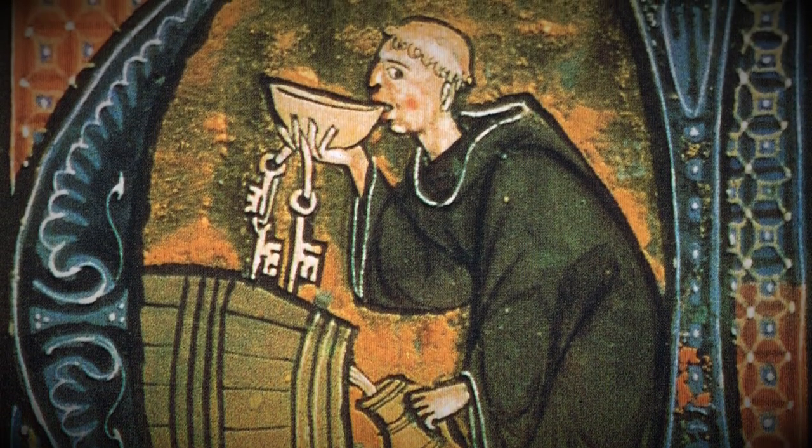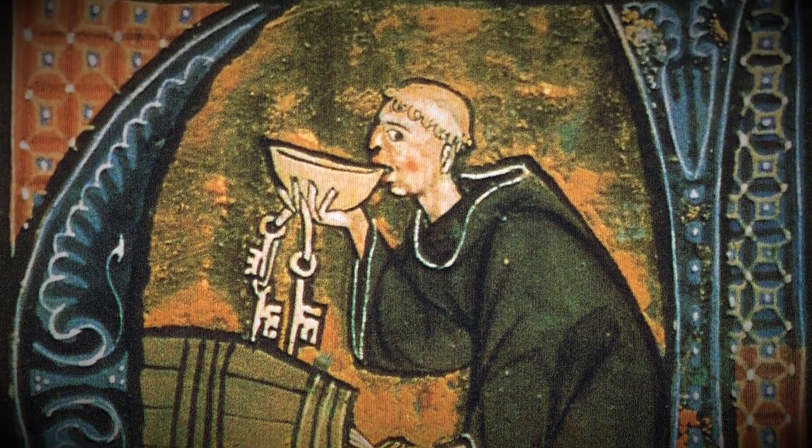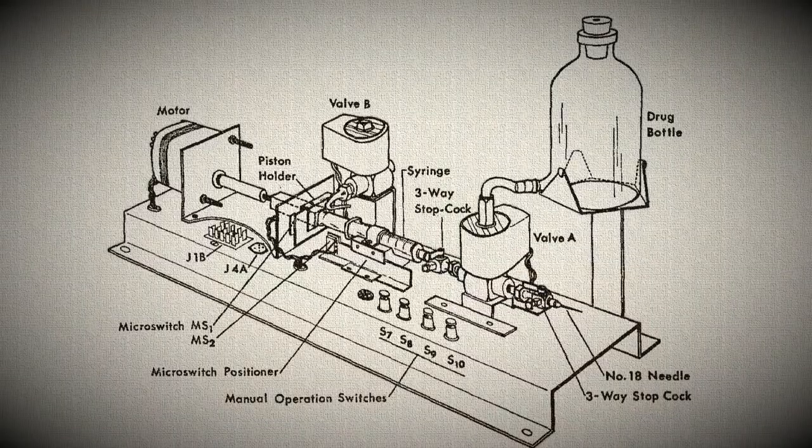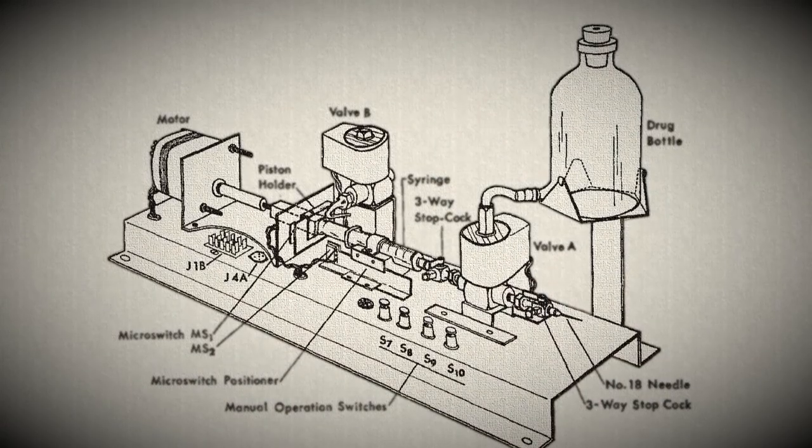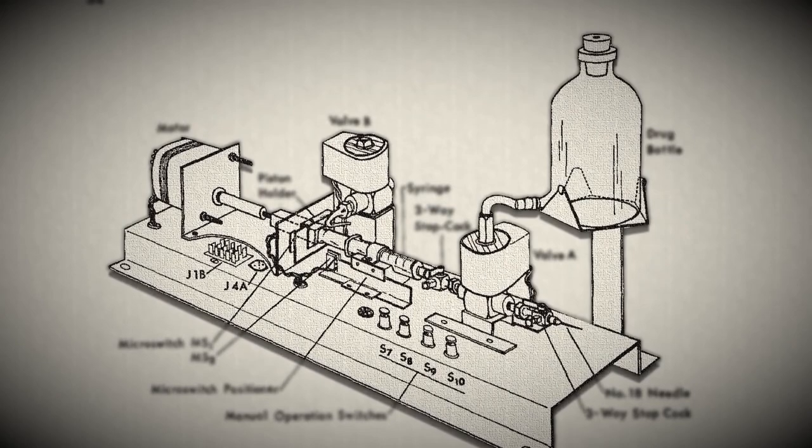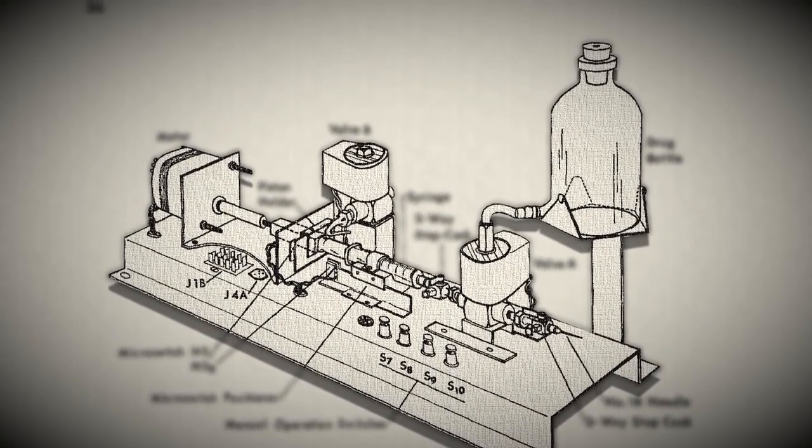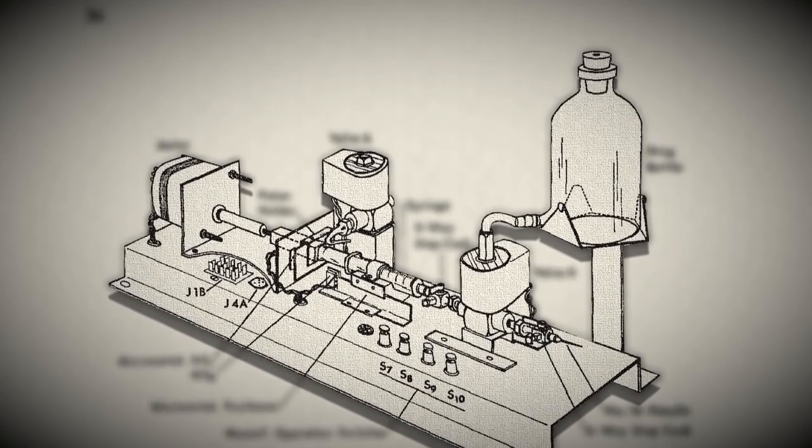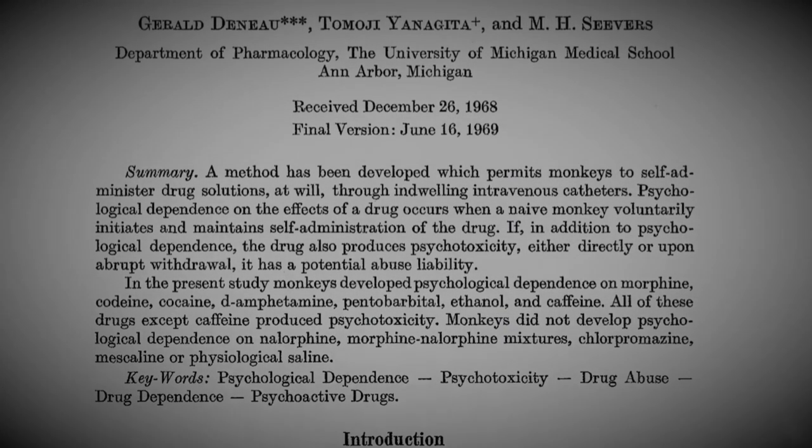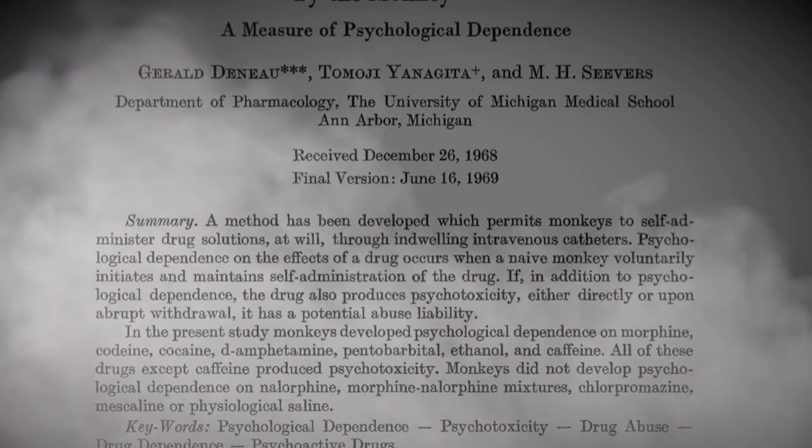The experiment, rather than studying human addiction, would focus on the animal kingdom and would make use of a bizarre contraption that allowed monkeys to self-administer highly addictive substances such as cocaine, amphetamines, and opiates. The experiment would result in terror for its subjects, where overdose, bodily disfigurement, and mental anguish were just some of the outcomes.